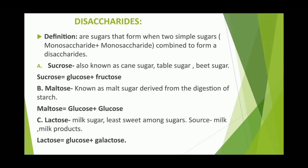Disaccharides — 'di' means two — are sugars formed when two monosaccharides combine. Types: Sucrose (cane sugar, table sugar, beet sugar) is the product of glucose plus fructose. Maltose (malt sugar), derived from digestion of starch, is the product of two glucose units. Lactose (milk sugar) is the least sweet among sugars; sources are milk and milk products; it is the product of glucose plus galactose.